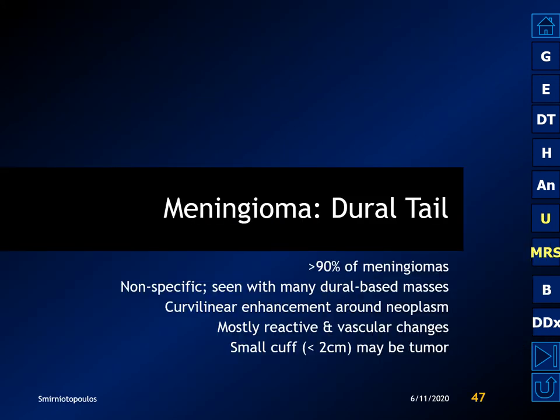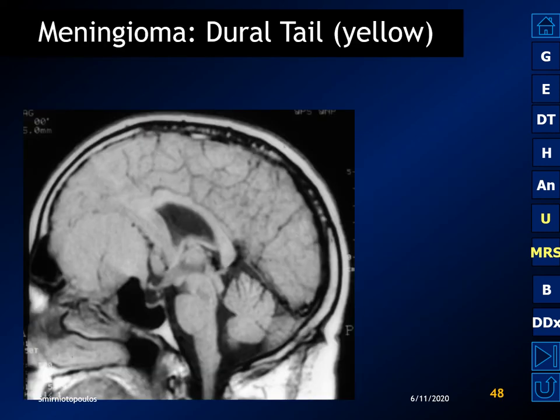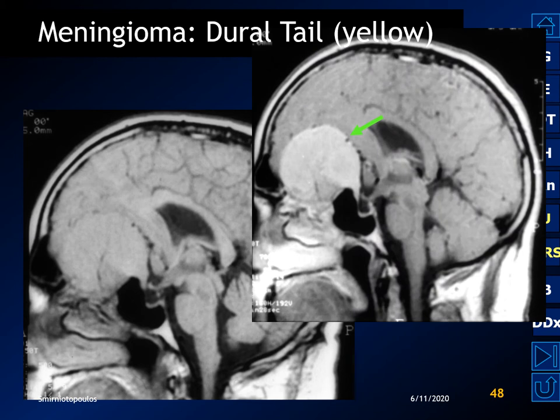The dural tail is a very common feature seen with meningiomas, observed in more than 90% of examples on MR. It's a nonspecific finding seen with many other dural-based masses. It consists of curvilinear enhancement and slight thickening of the dura around the margin of the tumor, consisting mostly of reactive and vascular changes. However, a small cuff around the tumor — less than two centimeters — may consist of neoplastic infiltration.